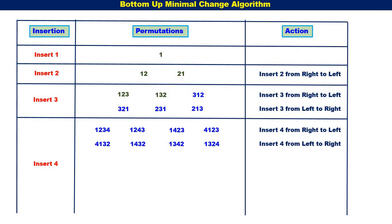Next, the permutation we consider is {3, 1, 2}. For {3, 1, 2}, it is right to left. First, we insert 4 to the right of {3, 1, 2}: we get {3, 1, 2, 4}, then {3, 1, 4, 2}, then {3, 4, 1, 2}, and {4, 3, 1, 2}. You can observe 4 is moving from right to left.